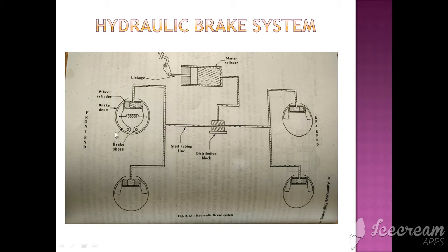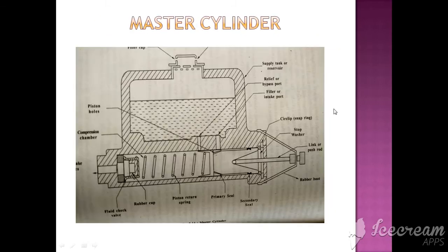For return or retrieval, a spring is available. This is a steel tubing and this is a distribution block, and all four wheels — the front two wheels and rear two wheels — all of them have brakes applied simultaneously. We have also seen this wheel master cylinder, near your brake pedal, inside the engine compartment.